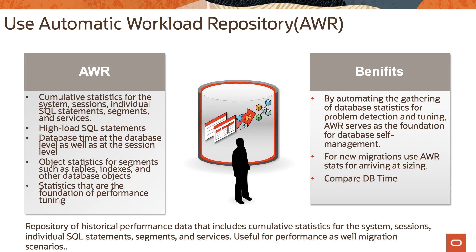AWR also captures object stats for segments as well as indexes and other database objects. It is important because stats are the foundation of performance tuning. By automating the gathering of database stats, you can use this data for sizing, and you can also compare database time between two performance windows. You can generate AWR report comparisons for two different windows or different workloads, which helps with faster analysis of system performance.